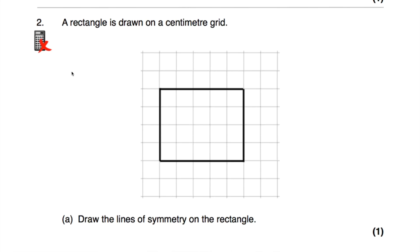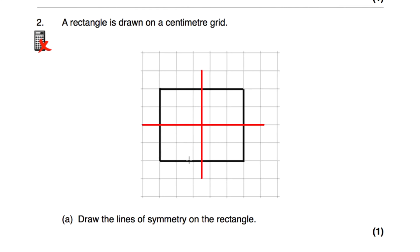Question number two: a rectangle is drawn on a centimetre grid, where each square is one centimetre by one centimetre. We've been asked to draw all the lines of symmetry on the rectangle. A rectangle will have two lines of symmetry — a vertical one and a horizontal one. The horizontal line passes through the middle of the rectangle horizontally, and the vertical line is in the middle as well. Those are the two lines of symmetry.